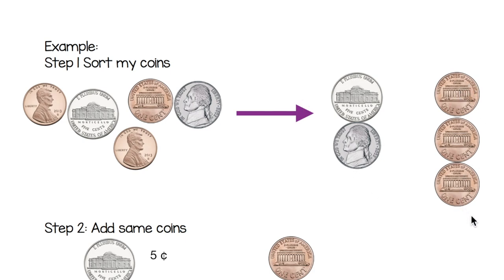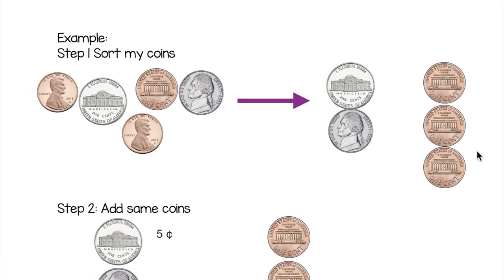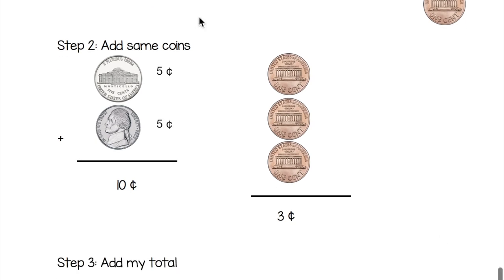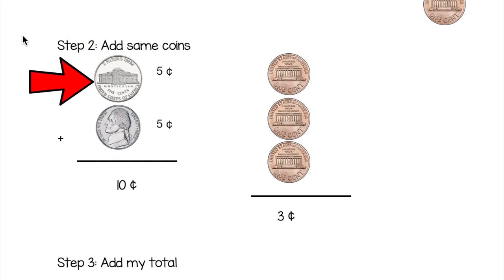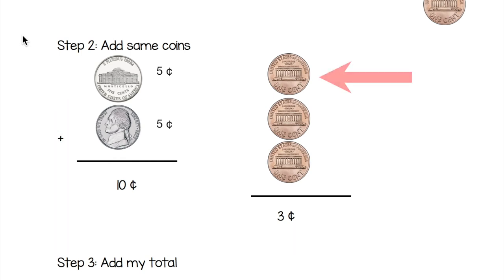Then we were ready for step two — add same coins. We knew that nickels are worth five cents, so we counted by fives: five, ten — ten cents in our nickels. Then we added our pennies; pennies are one cent, so we counted by ones: one, two, three — three cents in pennies.